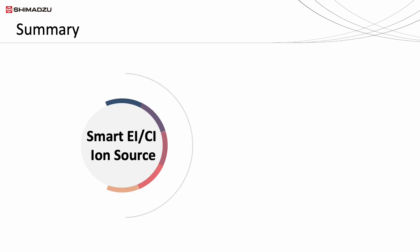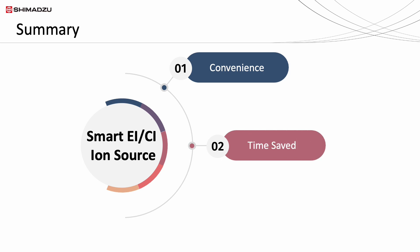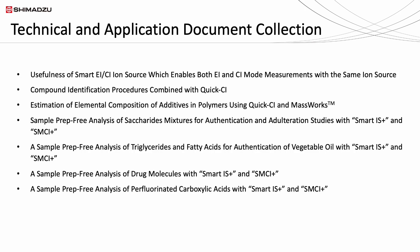In conclusion, using a smart IS unit allows users to switch between EI and CI mode analysis without the need to change the ion source. Therefore, smart IS can bring much benefit to users in terms of convenience and amount of time saved. Various applications such as the analysis of forensic toxicology substances will benefit from utilizing a smart IS unit. For more information on smart IS, you may click on the link in the description box to view the various technical and application documents.